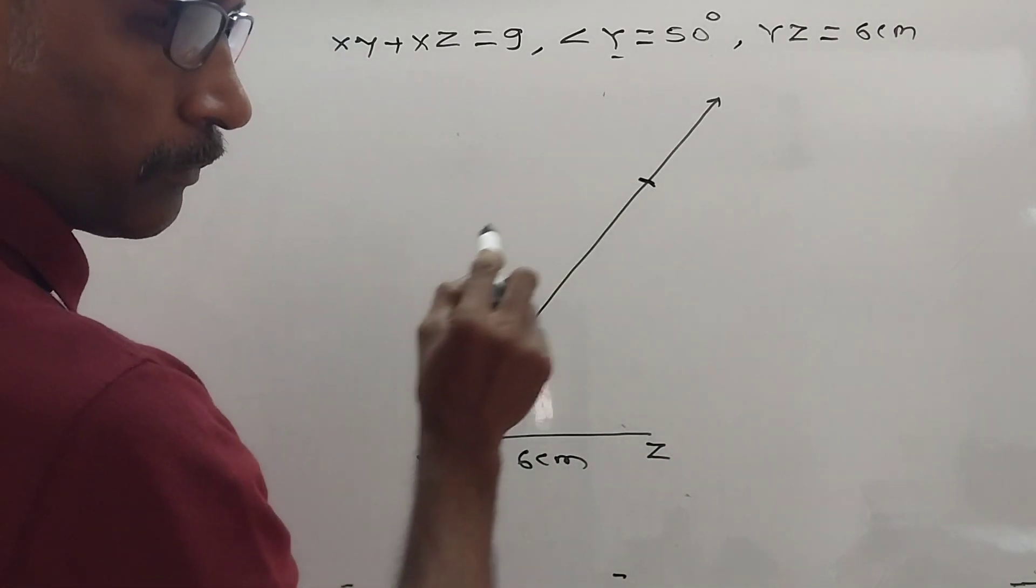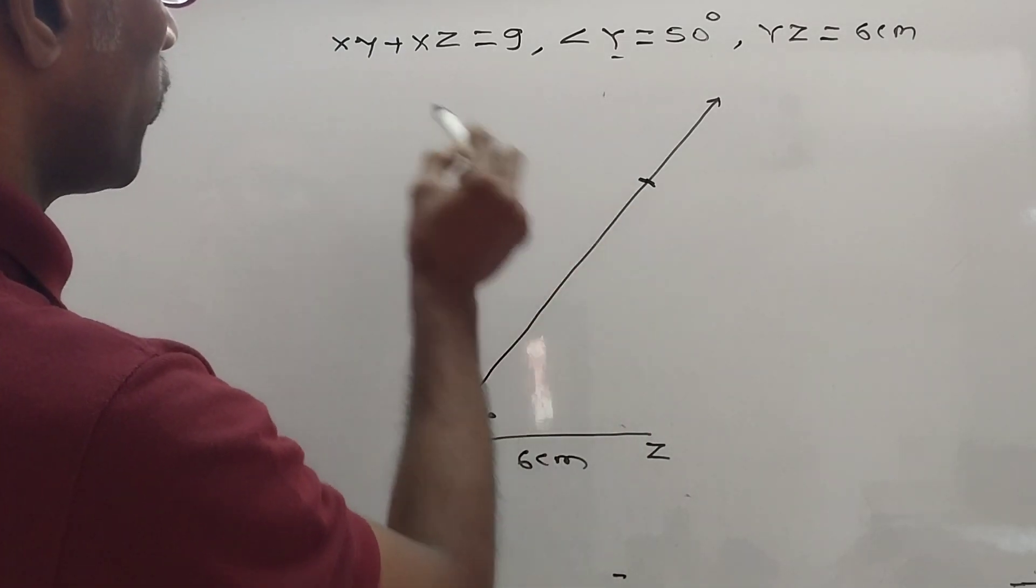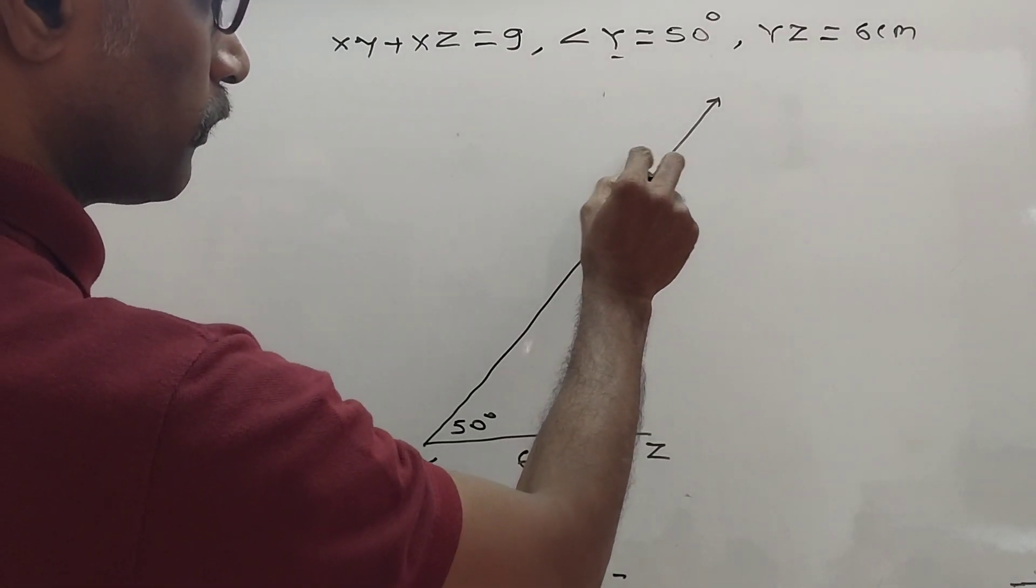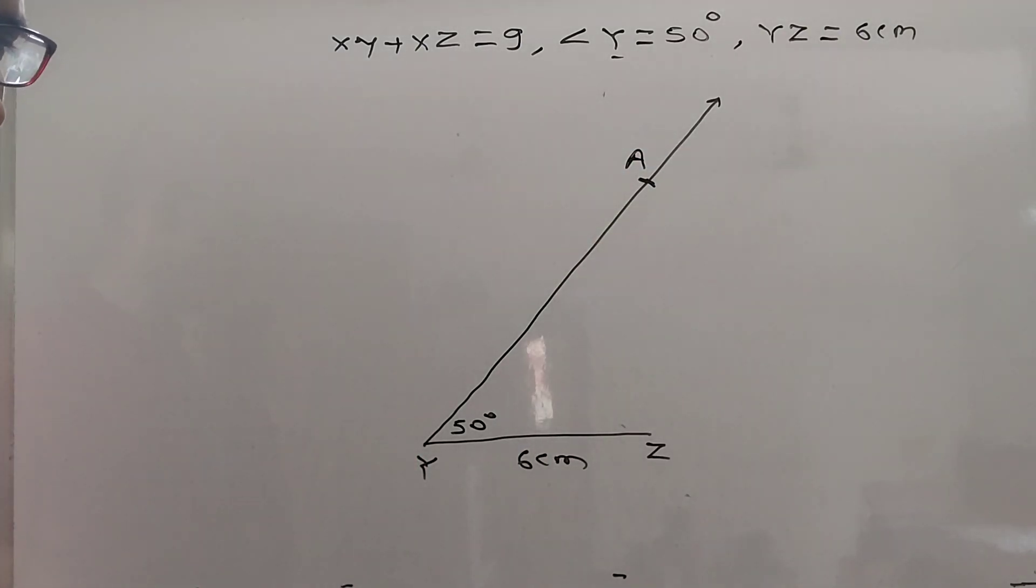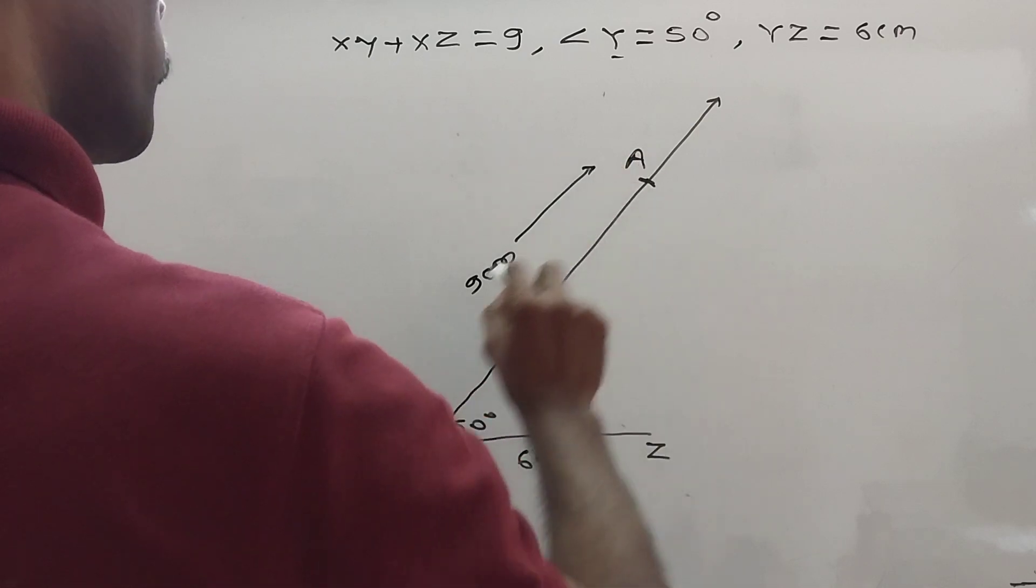At point, give the name of this point other than X, Y, and Z. Write any A, B, C, like that. Any you take that. This is our 9 cm. Did you understand?